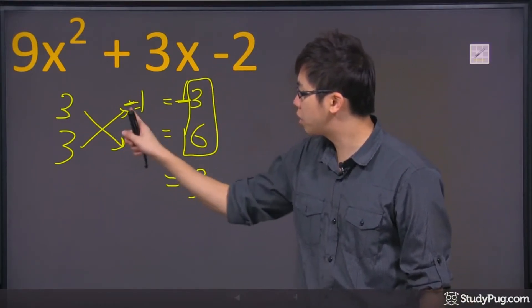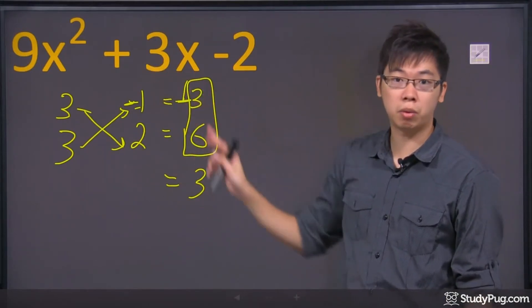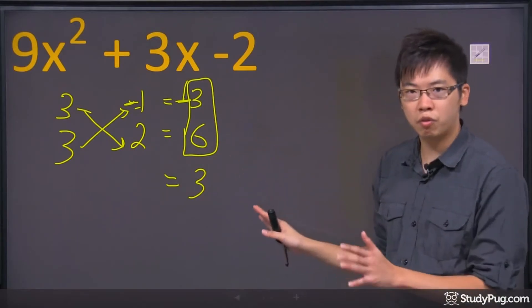Cross-multiplying, 3 times negative 1 is negative 3. 3 times 2 is 6. By adding it, I do get the middle number. Why does everything here make sense perfectly?